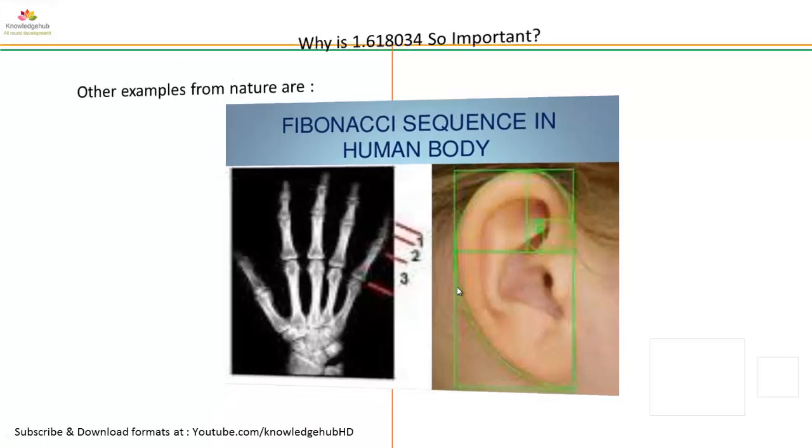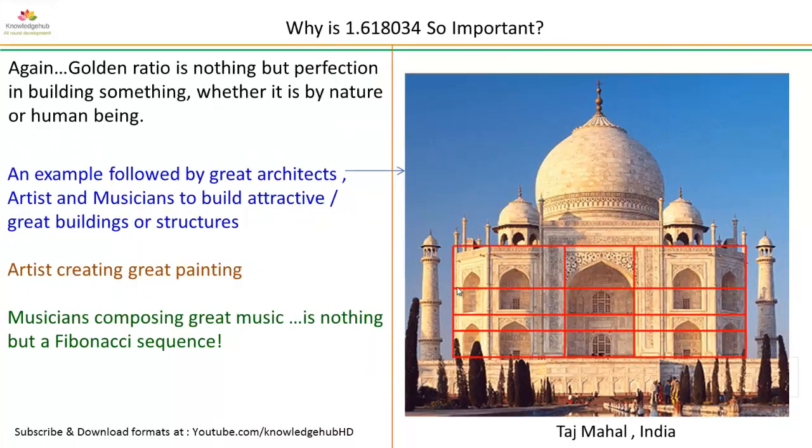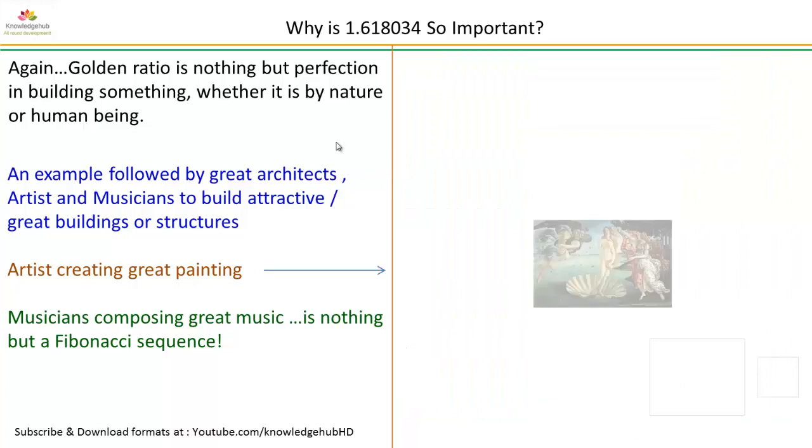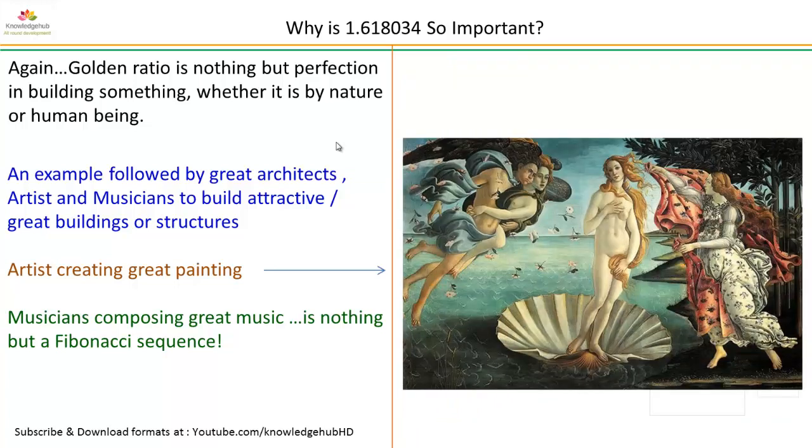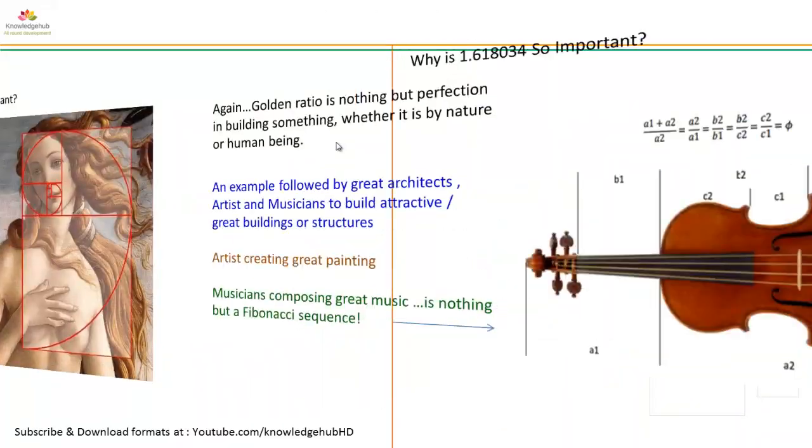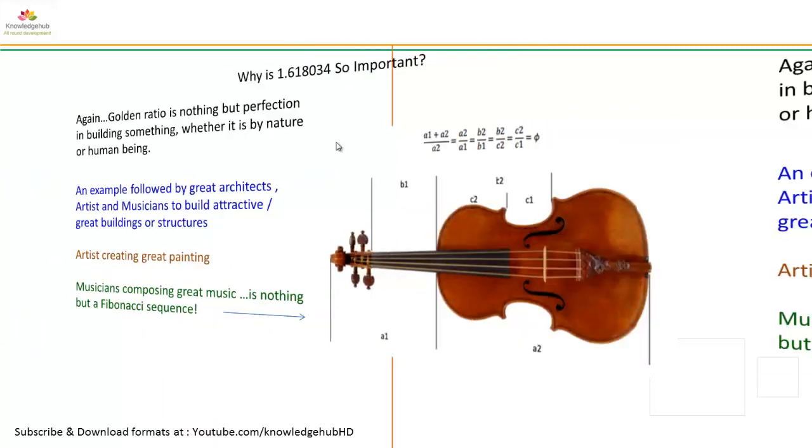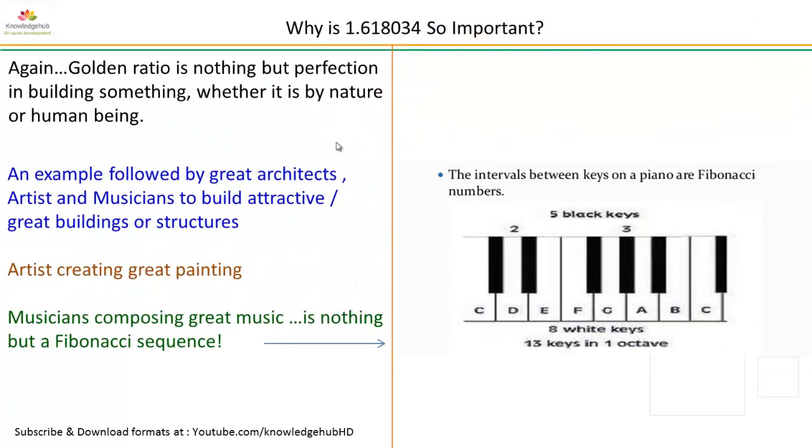Again, golden ratio is nothing but perfection in building something, whatever it is by nature or human being. Examples followed by great architects, artists, and musicians to build attractive great buildings or structures. The structural examples are like Taj Mahal in India, Notre Dame Paris. Artists creating great paintings are following the Fibonacci sequence, Fibonacci spiral curves. Musicians composing great music use Fibonacci sequence. The instruments are created in the length of Fibonacci sequence, guitar, and the intervals between keys in piano are Fibonacci numbers: eight keys, 13 keys in one octave.